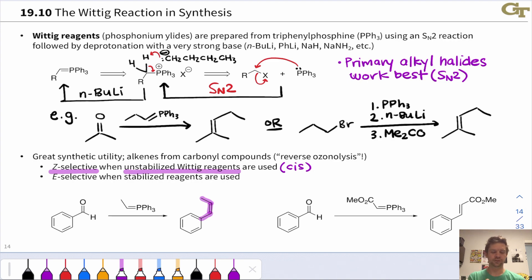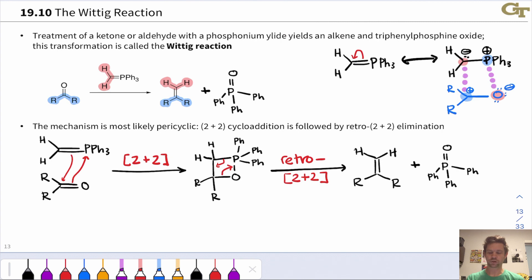Now the Wittig reagent refers to this phosphonium ylid and unstabilized means that this negative charge in the phosphonium ylid is not stabilized by any electron withdrawing groups linked to the carbon. So there is this alternative resonance form of the C=P double bond.